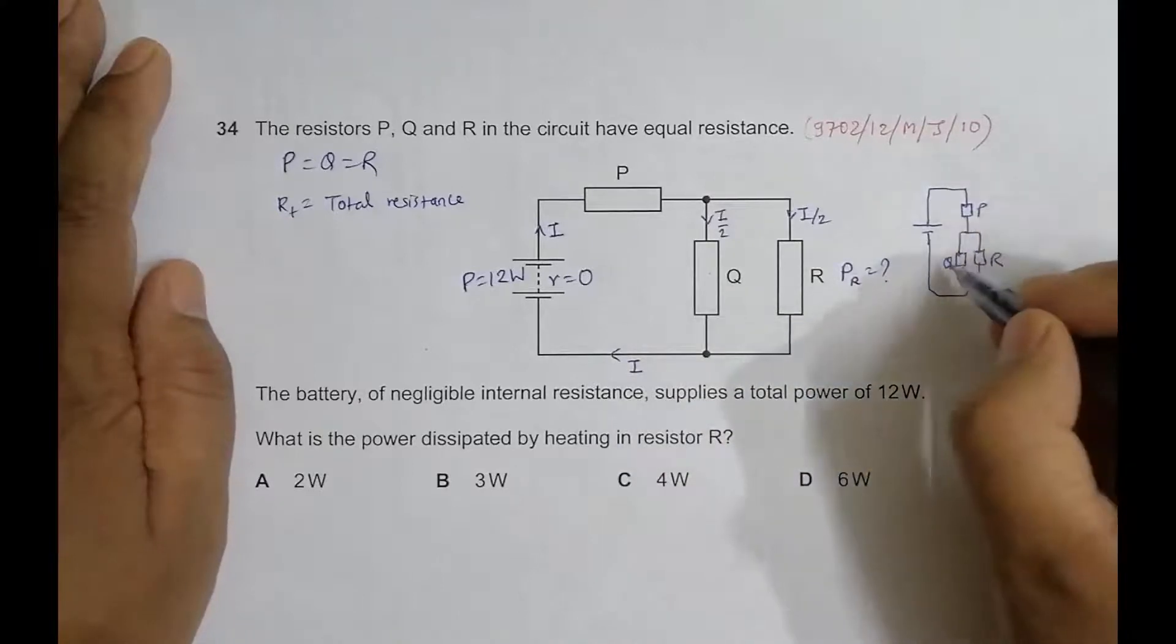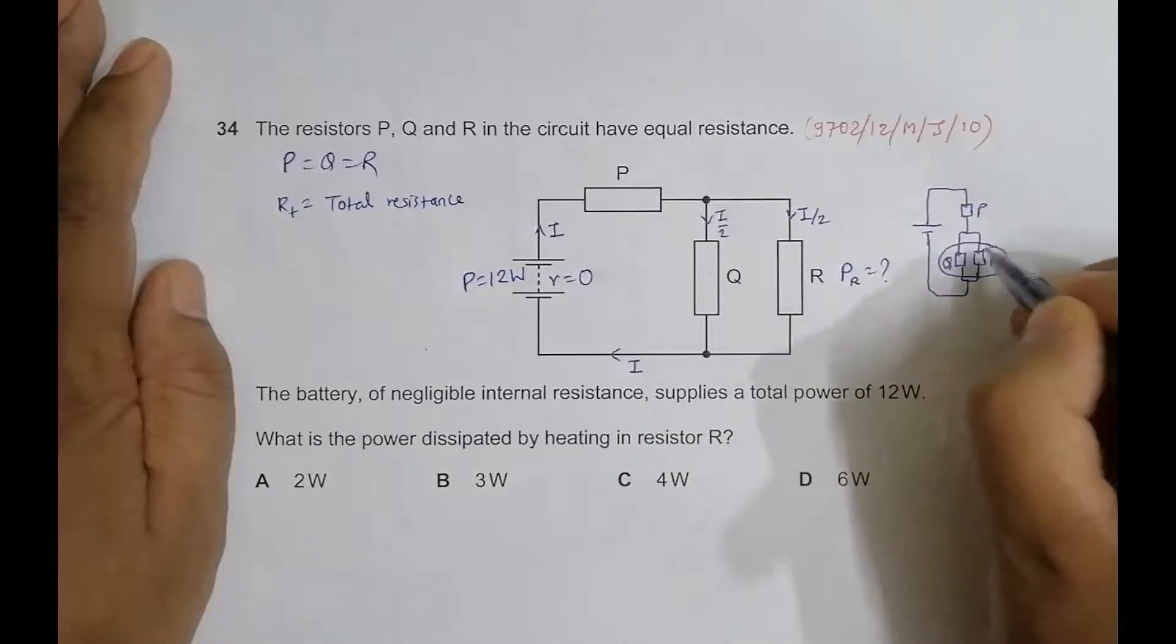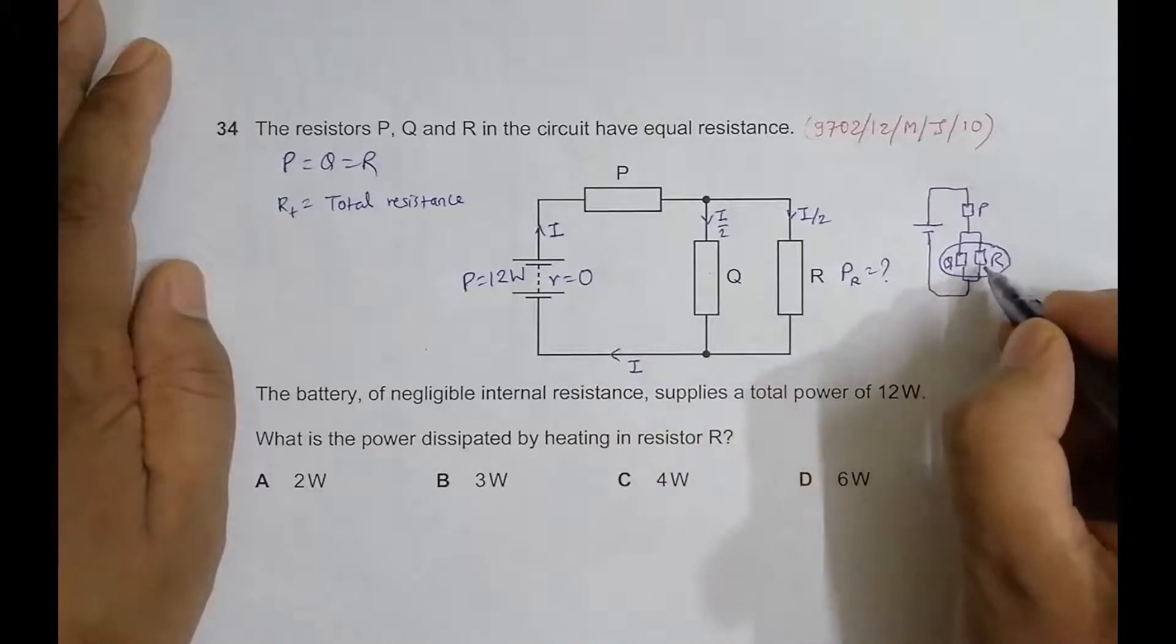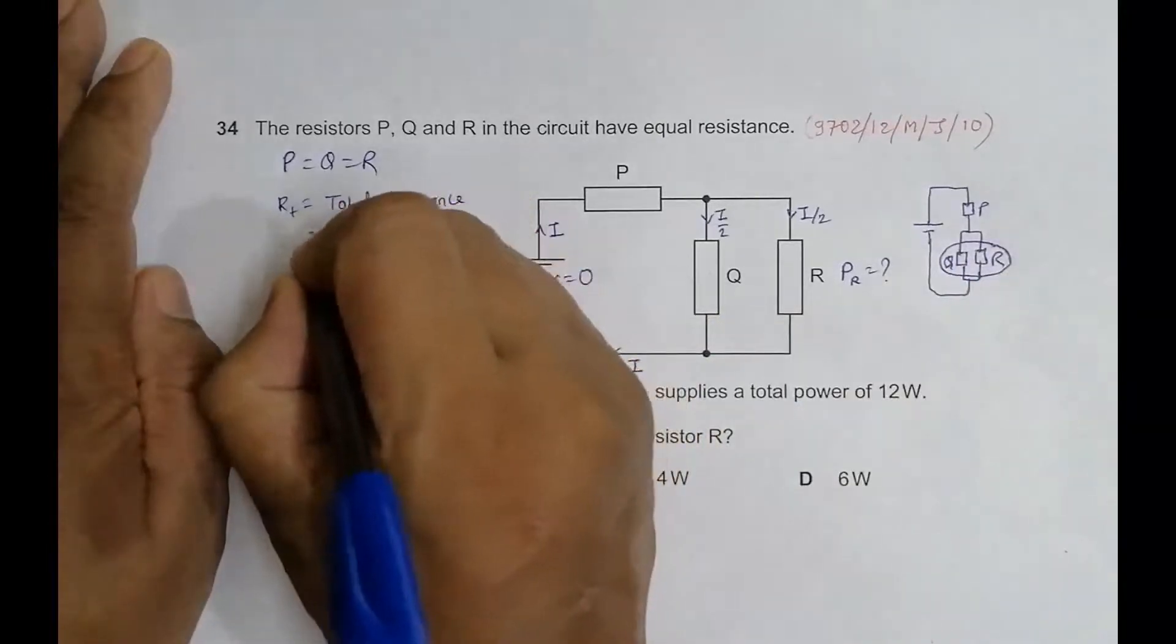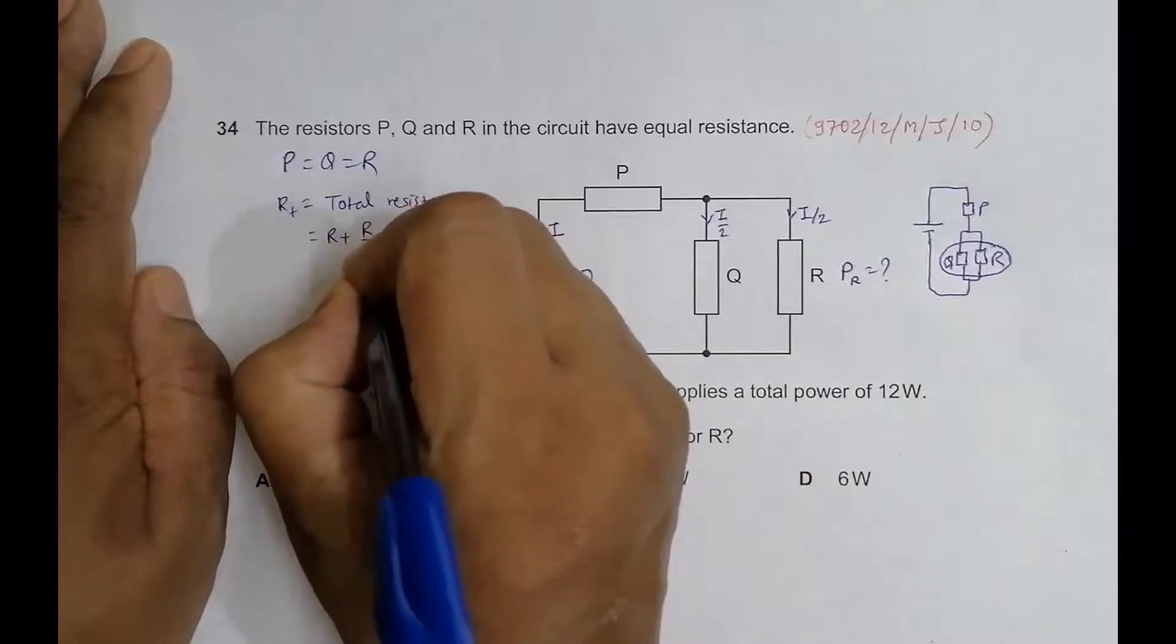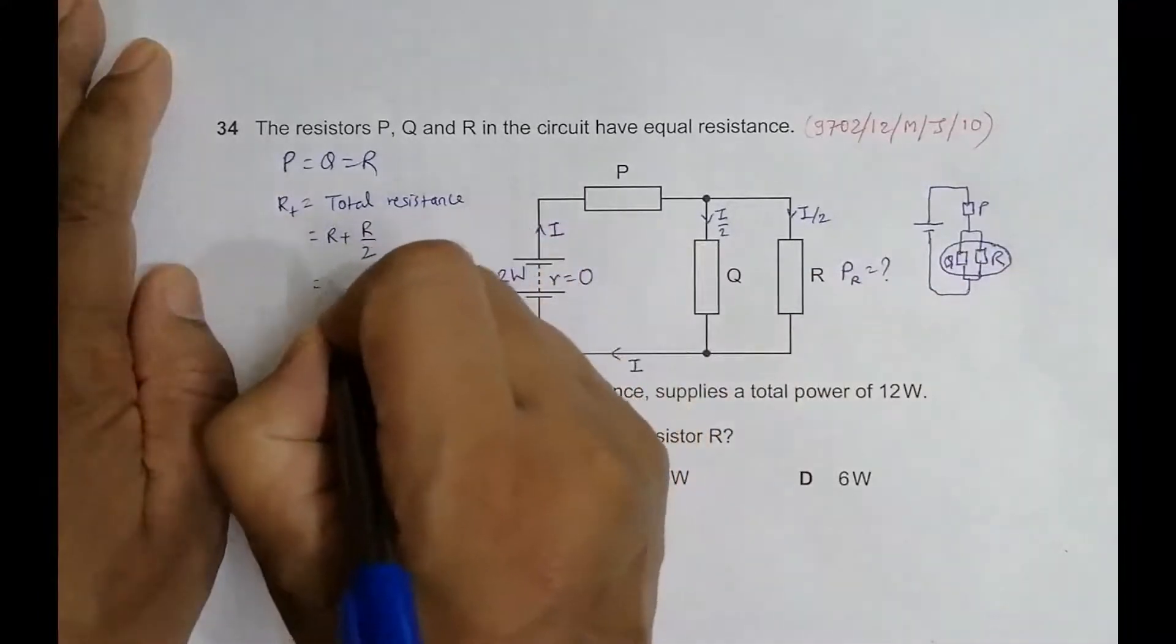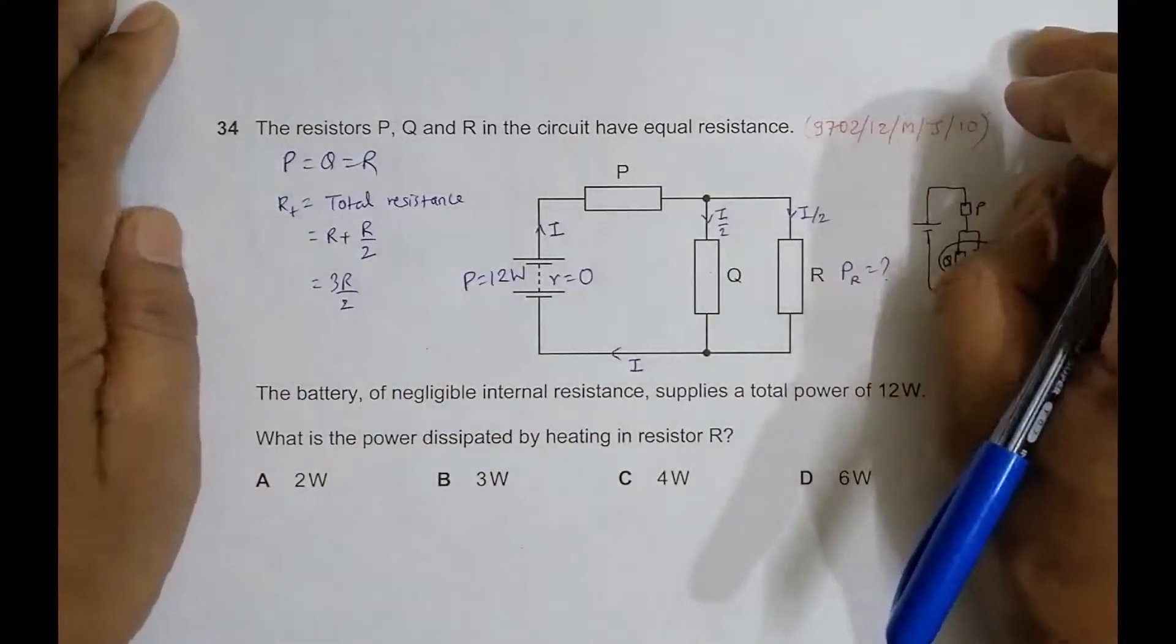The resistances will be equal. This is R, this is R. The combination of these two in parallel will be R/2. This R/2 and this R (which is P) will be in series, so the total resistance will be R + R/2 = 3R/2. This is the total resistance.